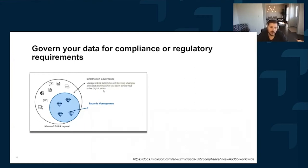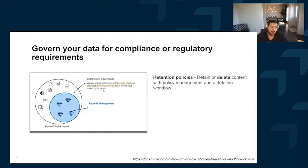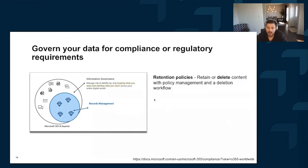Digging into the govern data section — this is designed for compliance and regulatory requirements, not for backup and recovery, and that is by design for Microsoft. It breaks into two broad categories: information governance tools and records management tools. Information governance covers classic business data — PowerPoints, PDFs, everything you use to run your organization day to day. The main goal is keep what you need and delete what you don't. The concept being: if the data is not present, it can't be accessed accidentally or deleted by a rogue admin. The main tool customers use here is retention policies, which are on by default — you create a policy that keeps data for a set period, then automatically deletes it.